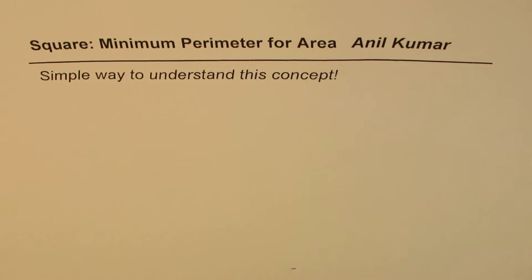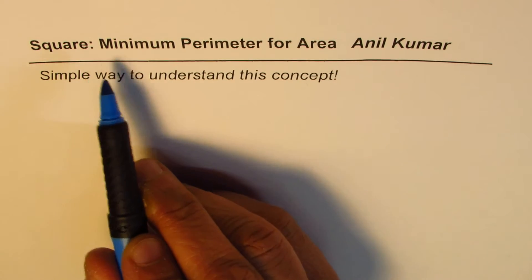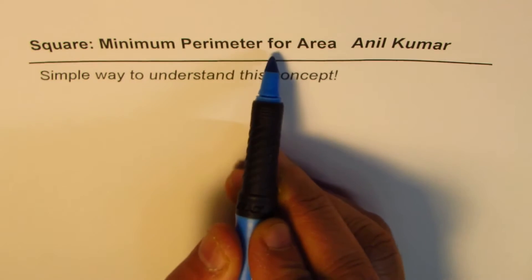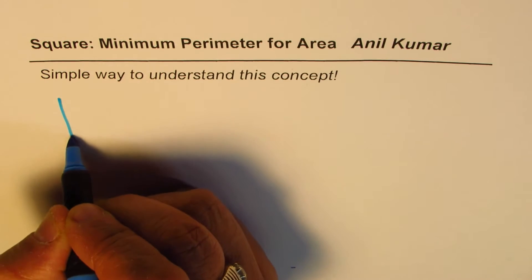I'm Anil Kumar and in this video we will explore that the square has minimum perimeter for given area, and I'll show you with the help of a very simple illustration. Let us consider this square.